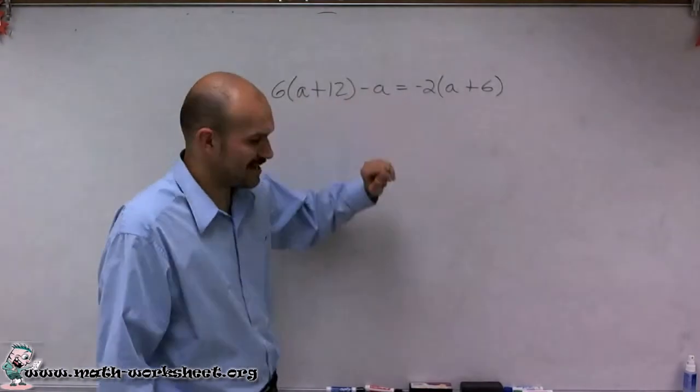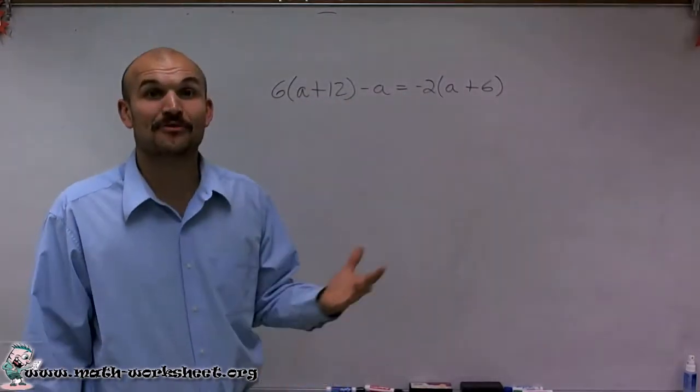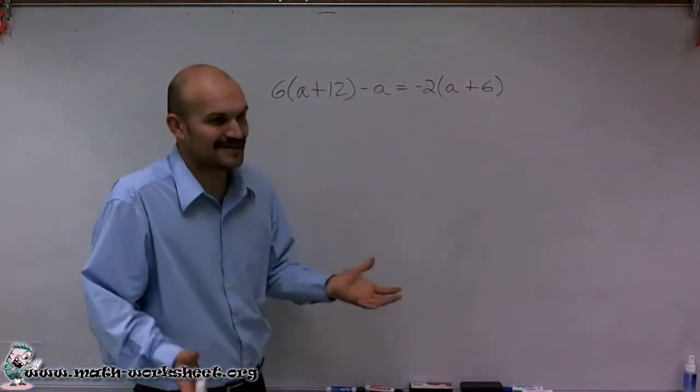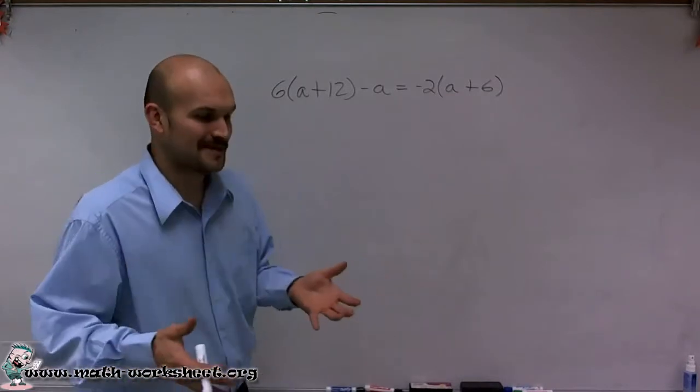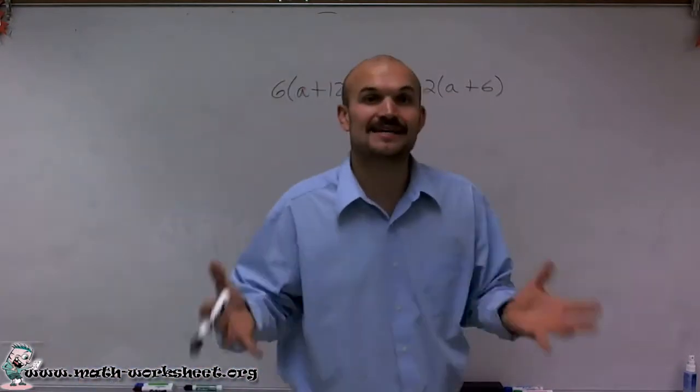So I see I have my variable a. And the problem that I come up to is I have three of the variables. Not only do I just have two, but I have three variables. And I also have variables on different sides of the equation.